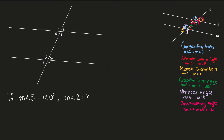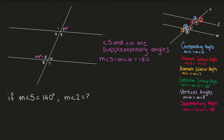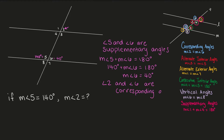If the measure of angle 5 is equal to 140 degrees, then what is the measure of angle 2? This one we'll have to find in two steps. First, angle 5 and angle 6 are supplementary angles, which means they add to give us 180 degrees. So we can find the measure of angle 6 by subtracting the measure of angle 5 from 180 — angle 6 is equal to 40 degrees. Then, angle 6 and angle 2 are corresponding angles, and corresponding angles are congruent, so the measure of angle 2 is also 40 degrees.